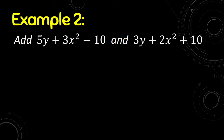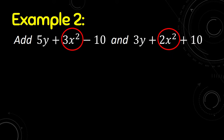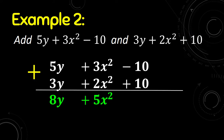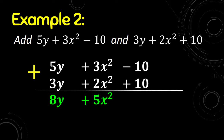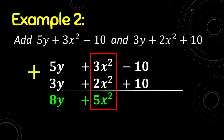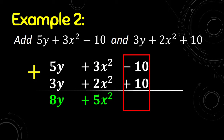Another example: we have 5y plus 3x² minus 10, and 3y plus 2x² plus 10. We check the like terms: 5y and 3y are like terms, 3x² and 2x² are like terms, and negative 10 and 10 are like terms. Combining them: 5y plus 3y is 8y, 3x² plus 2x² is 5x², and negative 10 plus 10 is 0. The sum is 8y plus 5x².